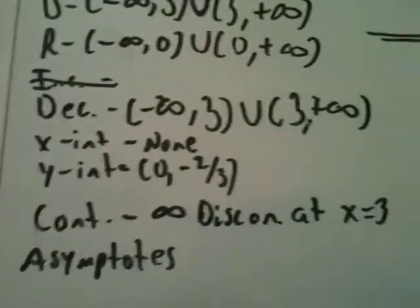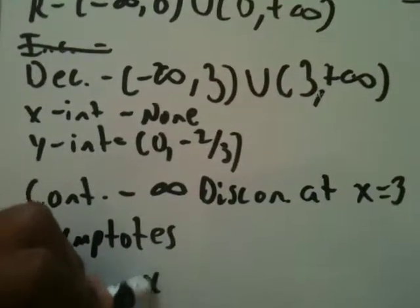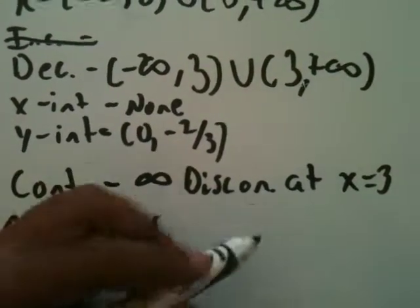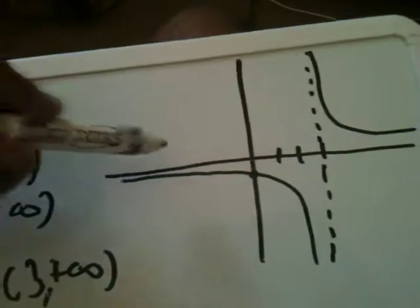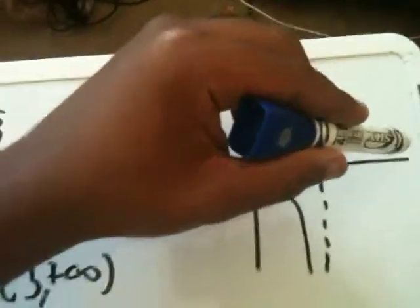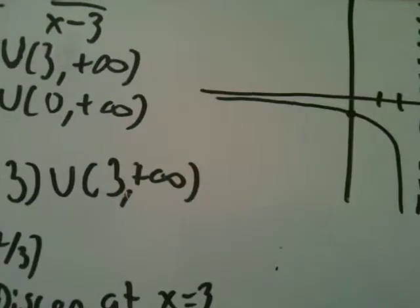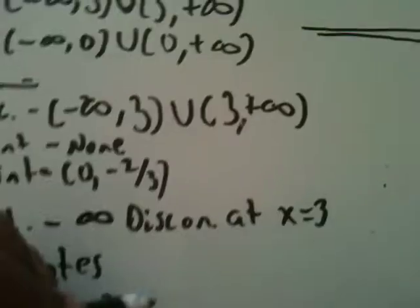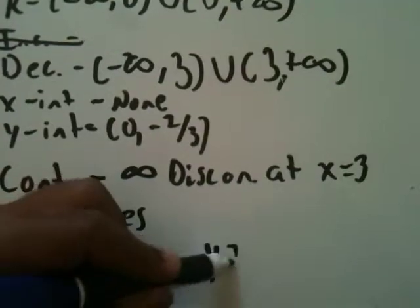And that's asymptotes. Well, this is already an asymptote, x equals 3, and then there's this line right here. It's approaching the x-axis, which is line x equals zero. Excuse me, y equals zero, I'm sorry. So it's going to be y equals zero.